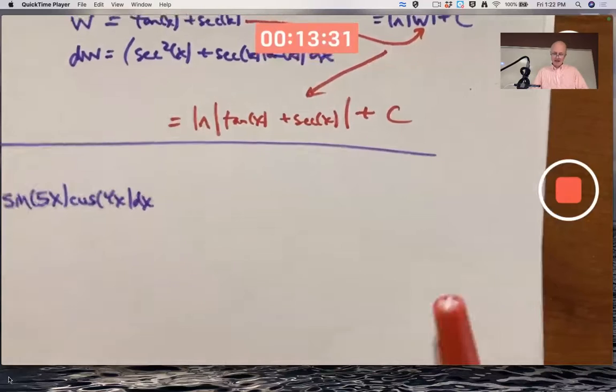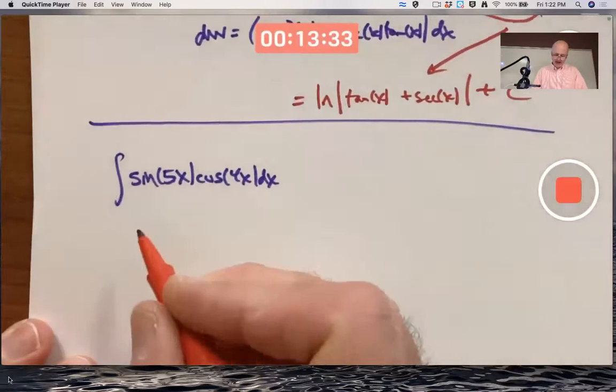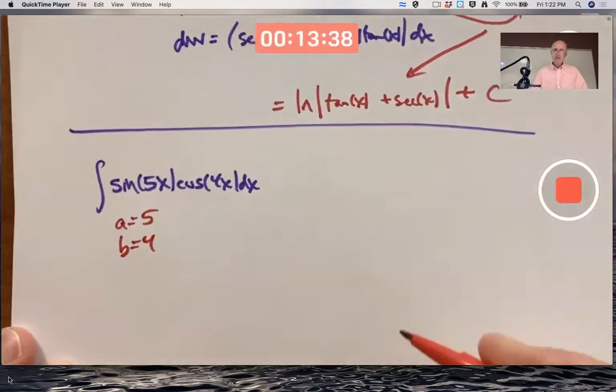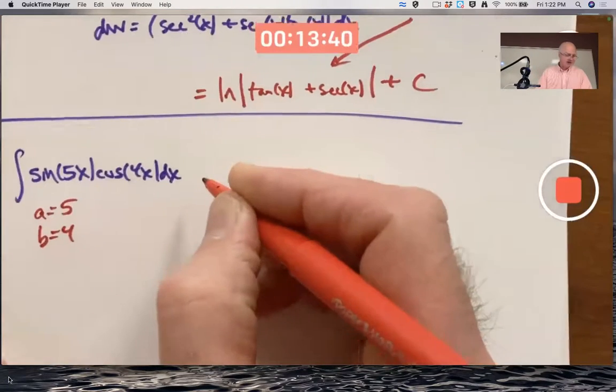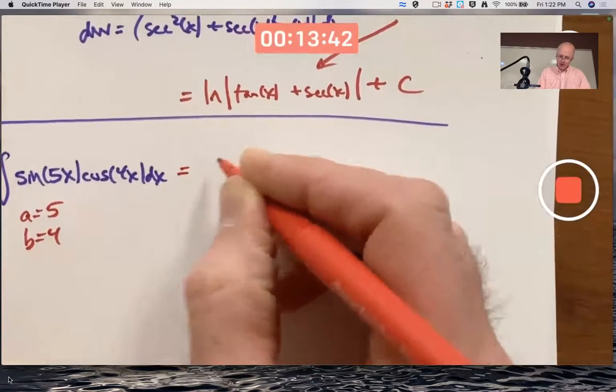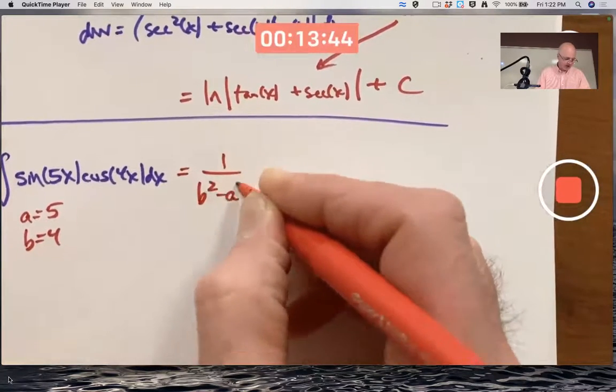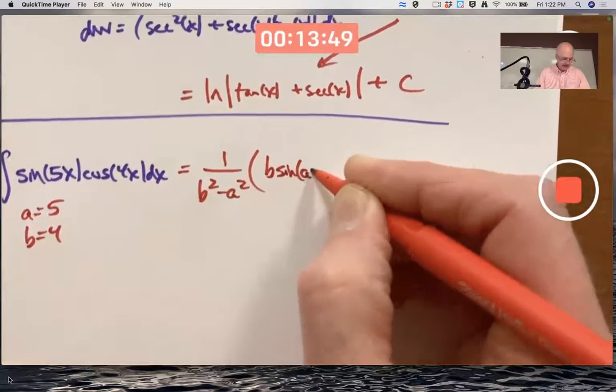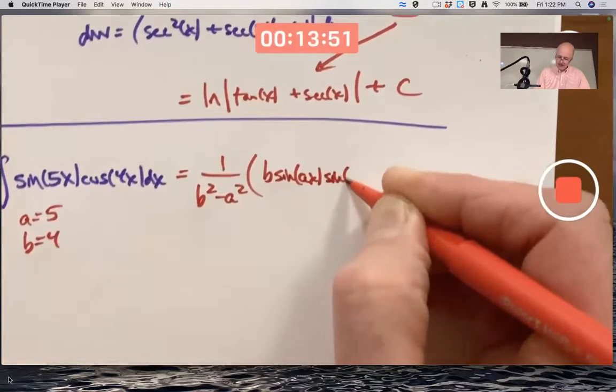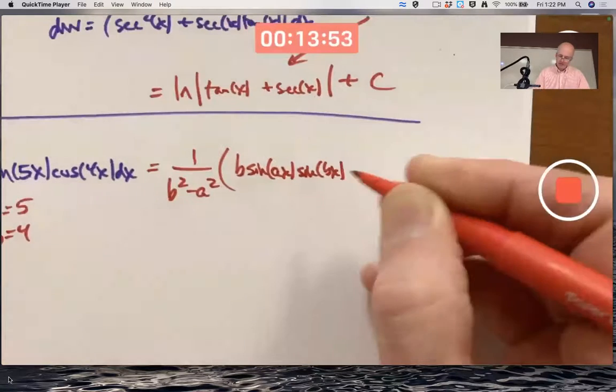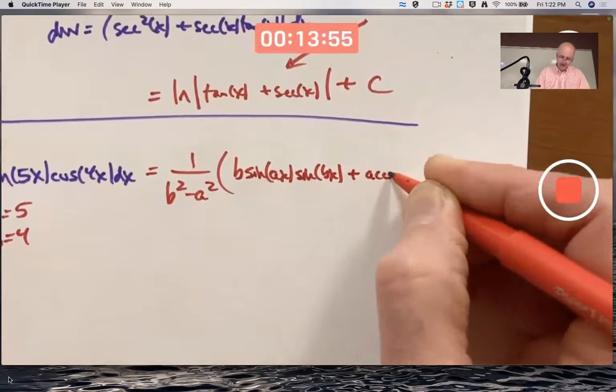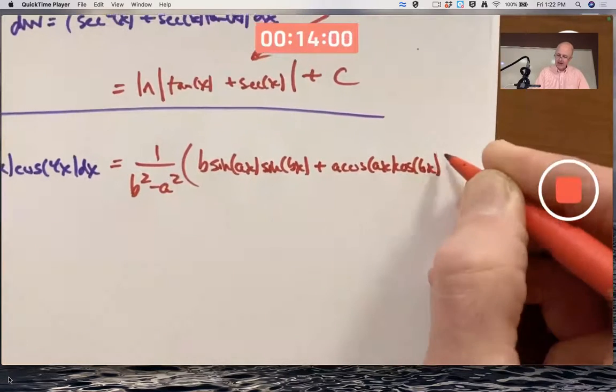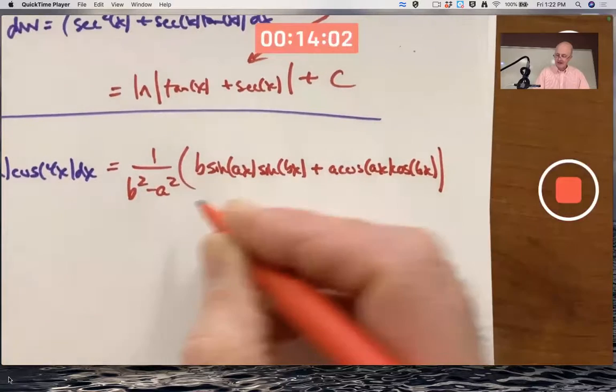So again, I'm coming back here. I'm going to use a is 5 and b is 4. I'll just rewrite what the back of the book says. It says this is 1 over b squared minus a squared times in parentheses b sine a x times sine b x plus a cos a x cos b x. Of course, you could not use this formula if a and b were equal because you'd be dividing by 0.